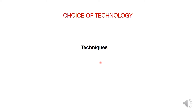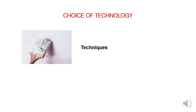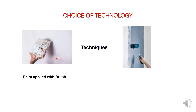The choice of technology also includes the techniques used for project work. For example, painting done by brush will require more time than painting applied with a roller. The technique using a roller accounts for less time. Modern techniques require higher cost and less time, while traditional techniques require more time and less cost.